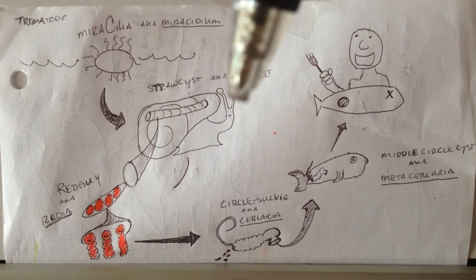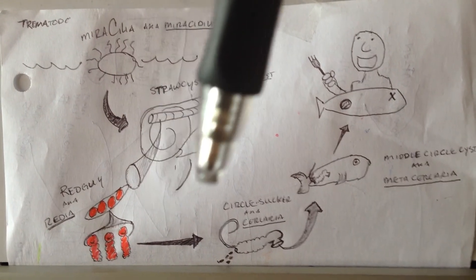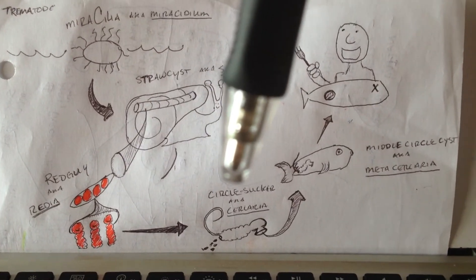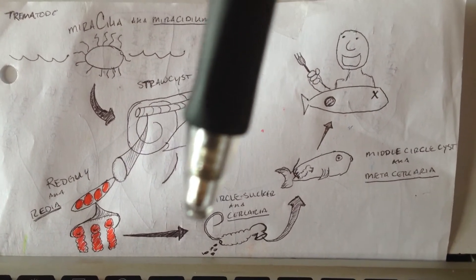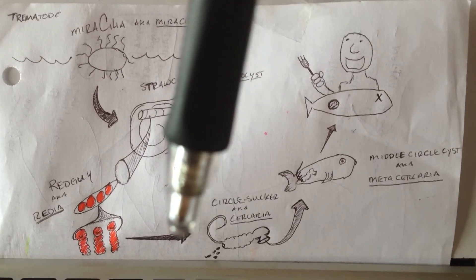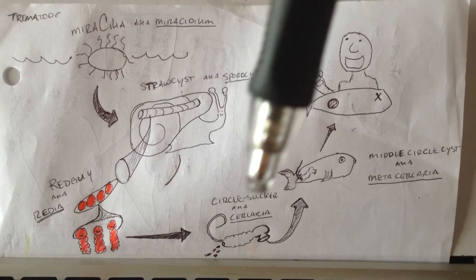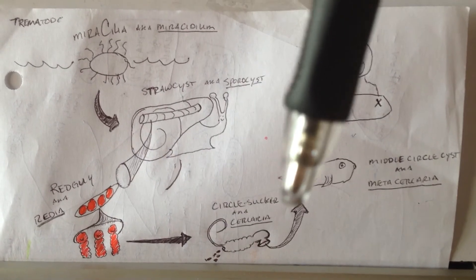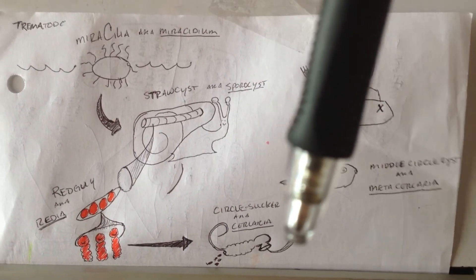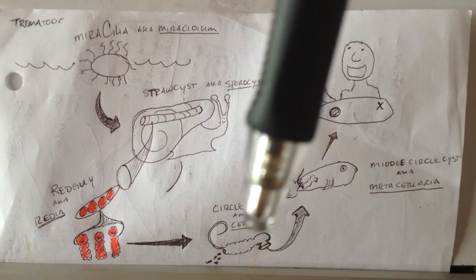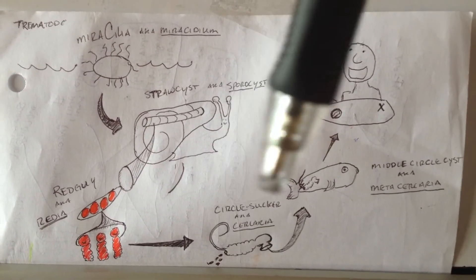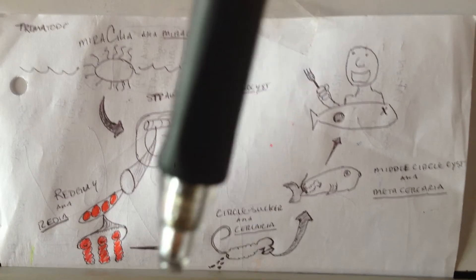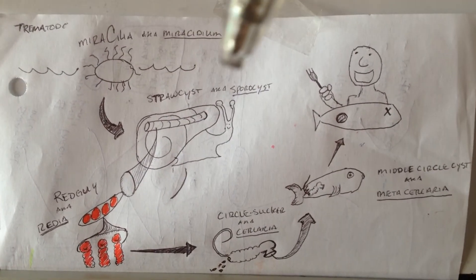From there we go to the circle sucker, aka cercaria, and I call it circle sucker because they have their sucker now. They also have a digestive tract, a tail, and a rectum.